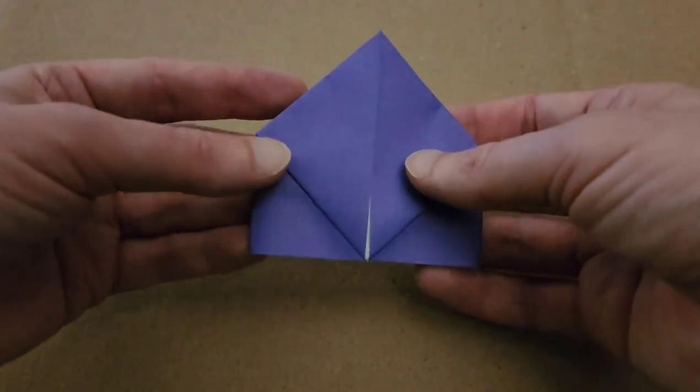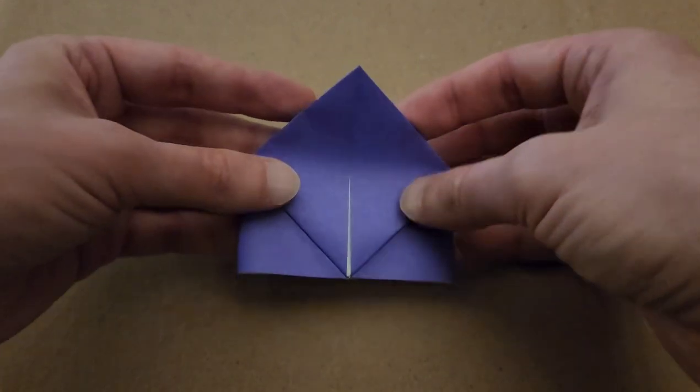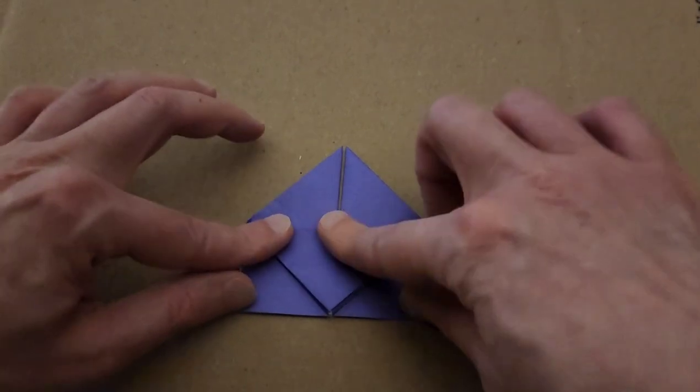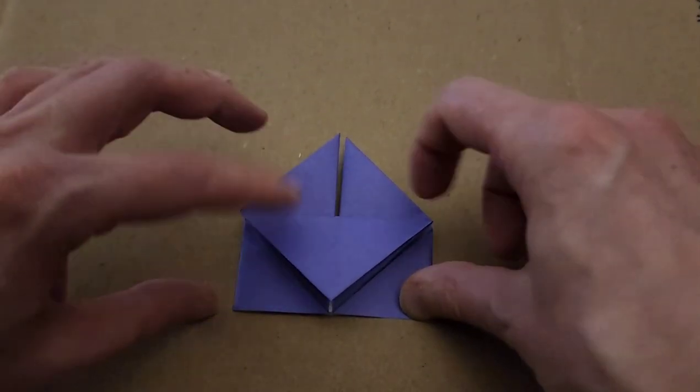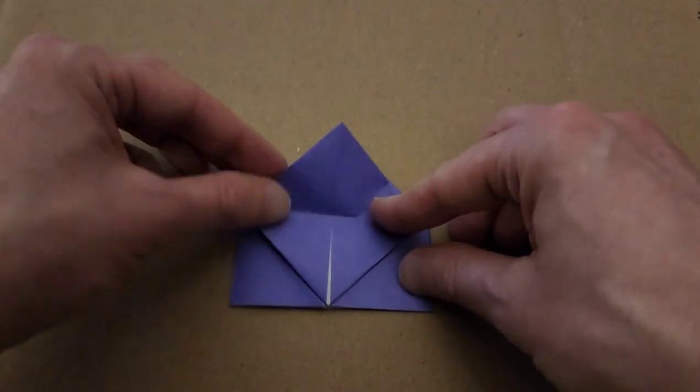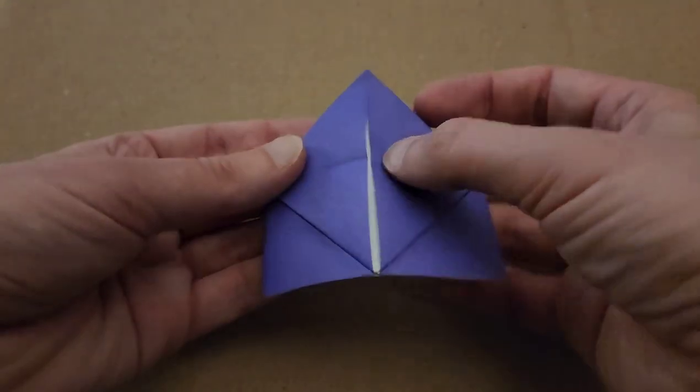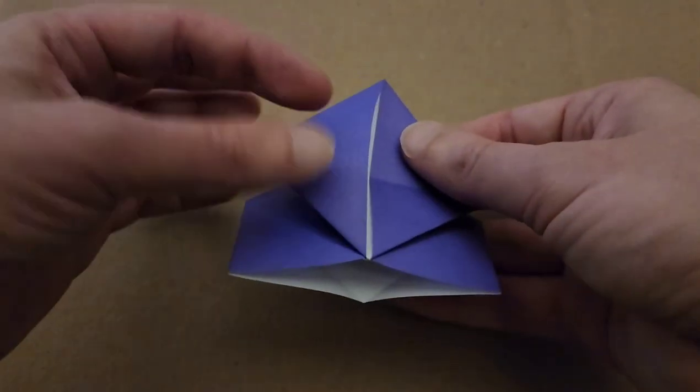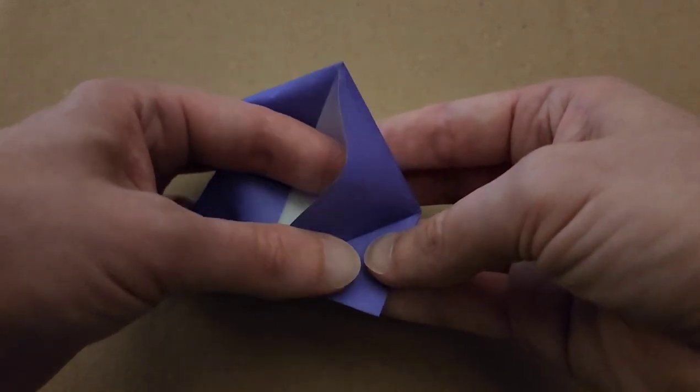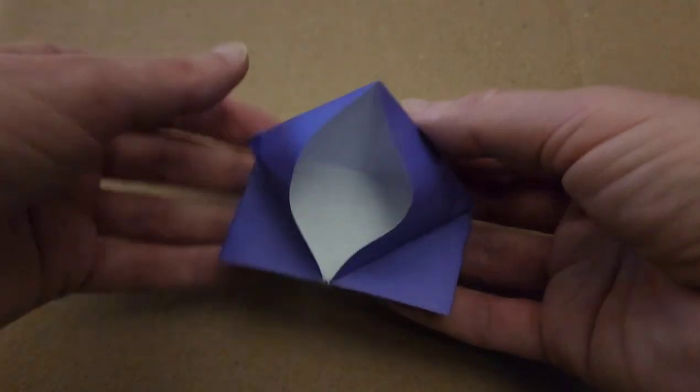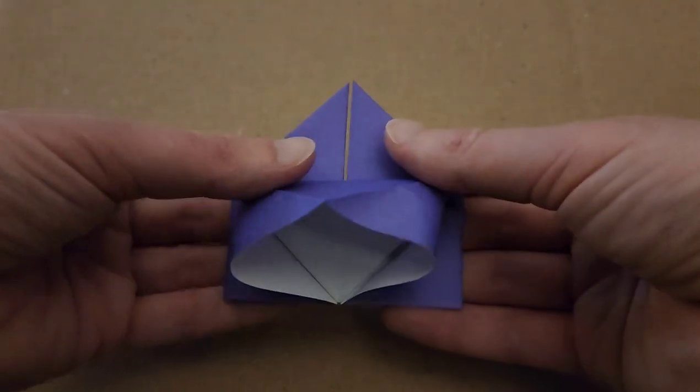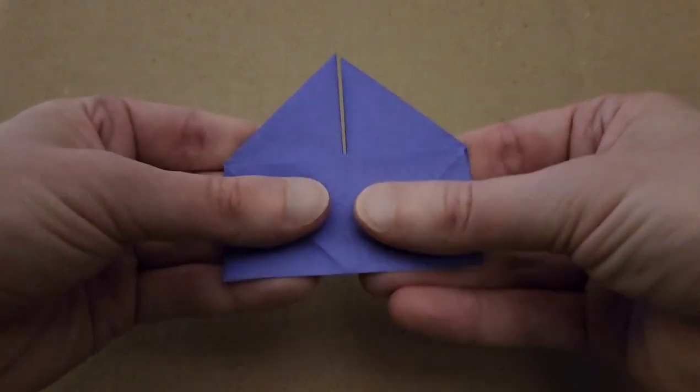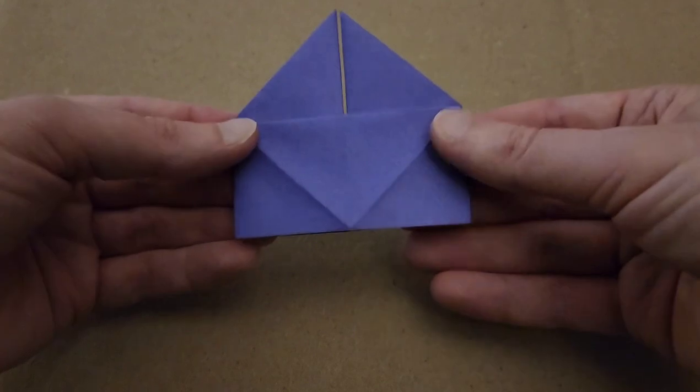And then we're going to do the same thing with the other side. So we're going to fold this flap down to the very bottom. And then open that flap. And then insert your thumb into the one side and your finger into the other side. Just open these up and squish and pinch.